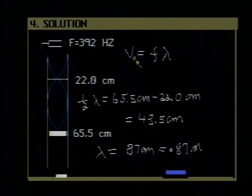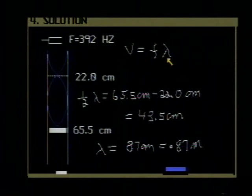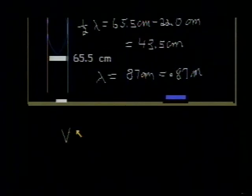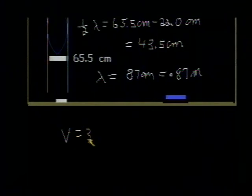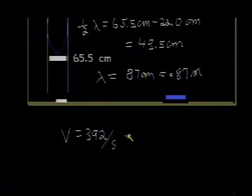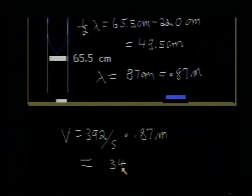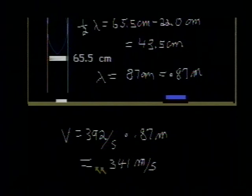The velocity of sound then is equal to the frequency times that wavelength. So the velocity of sound in the tube is equal to the frequency 392 per second multiplied by 0.87 meters. And if you carry out that multiplication, you come out with 341 meters per second as the speed of sound in the tube.